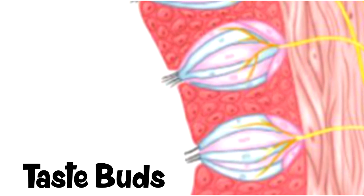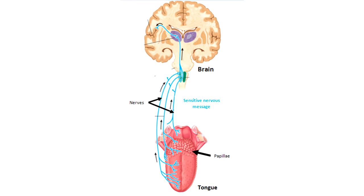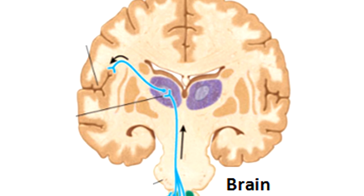Moreover, each one of these taste buds contains between 50 to 100 sensory cells that detect the stimuli of sensations. Then they send sensitive nervous messages to the brain via nerves and electrical impulses. Then, in the brain, a motor message is created after analyzing the sensitive one and is sent to the organs.